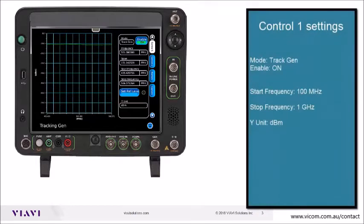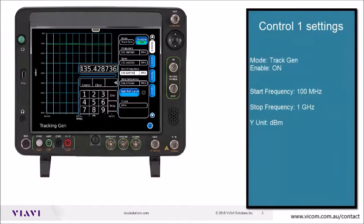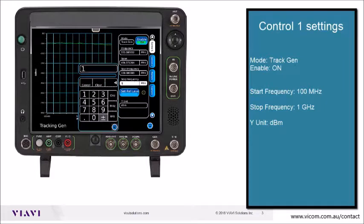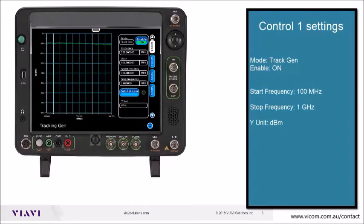Now the CTRL-1 settings: mode, track gen, and enable on. Then set start frequency to 100 MHz, stop frequency to 1 GHz, with the Y unit of dBm.